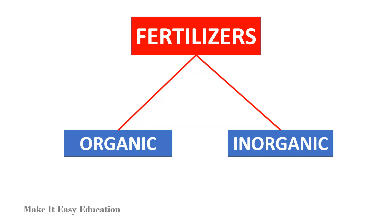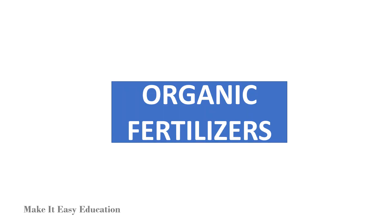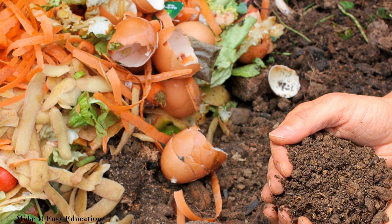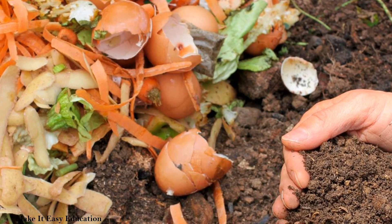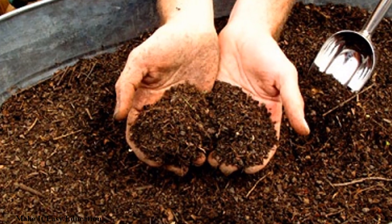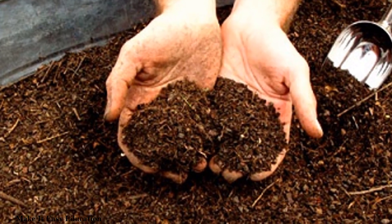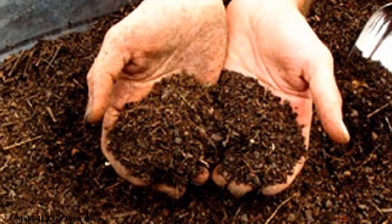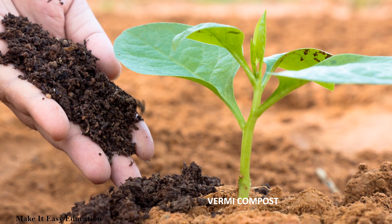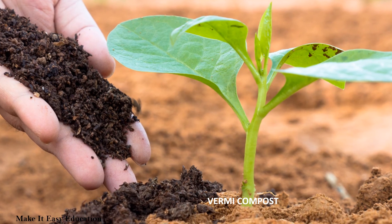Fertilizers are classified into organic and inorganic. Organic fertilizers contain only plant or animal-based materials, or materials synthesized by microorganisms. These fertilizers are prepared easily and they are economical. An example of organic fertilizers is vermicompost.